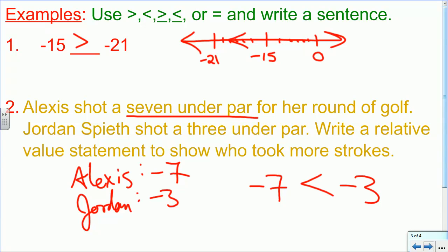So Alexis took less shots than Jordan did. We'll write that sentence, and I'd like you to end with a sentence. Alexis... oh, it asked who took more strokes, so we should actually probably say Jordan.